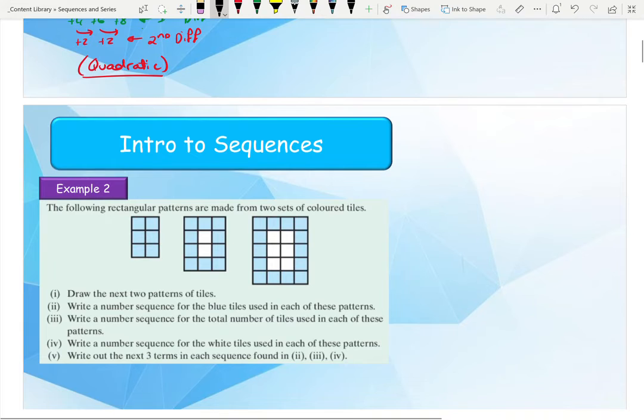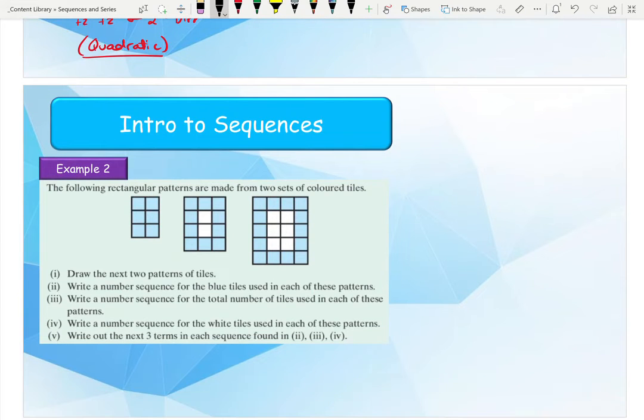Now, what we would do now looking at example 2 is you can see that it says draw the first two patterns of tiles. Now you can clearly see that in pattern 1 there's no red tiles, there's just 6 blue tiles. In pattern 2, we have an outline of blue tiles, but two red tiles in between, or two white tiles in between.